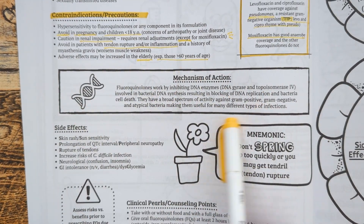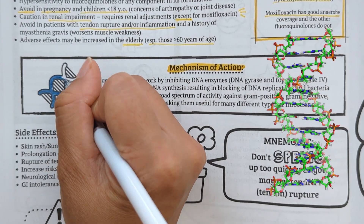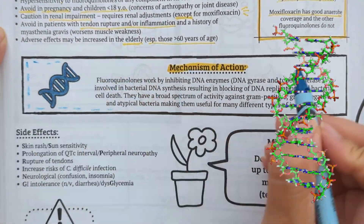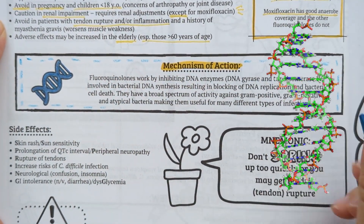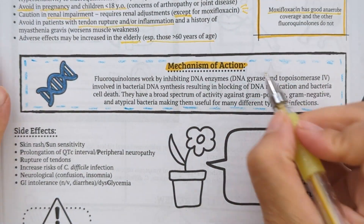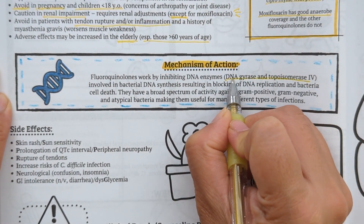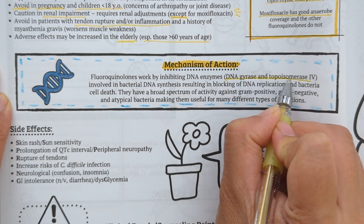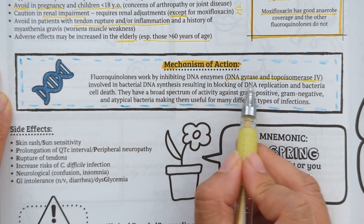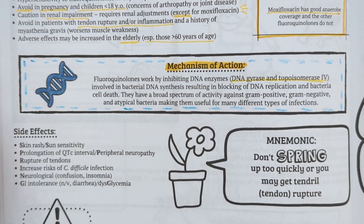Fluoroquinolones work by inhibiting DNA enzymes involved in bacterial DNA synthesis, which blocks DNA replication and leads to bacterial cell death. The two enzymes inhibited include DNA gyrase and topoisomerase 4 — two essential enzymes in bacterial DNA transcription and replication.